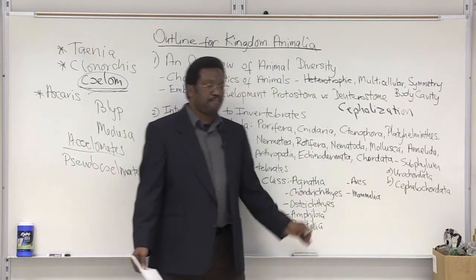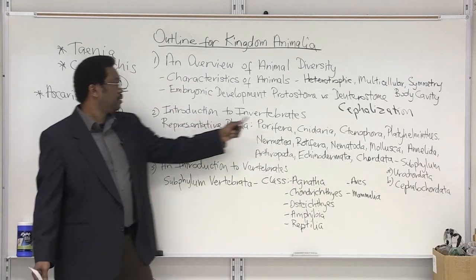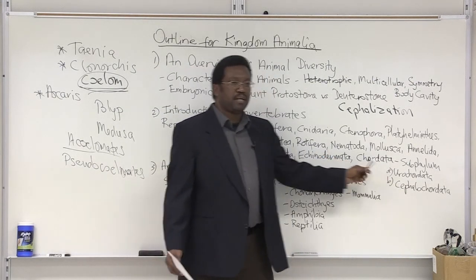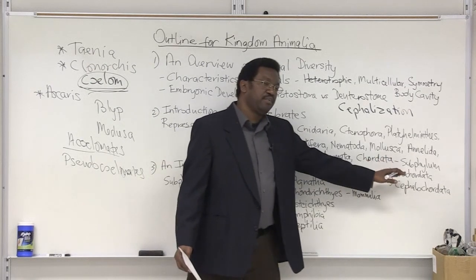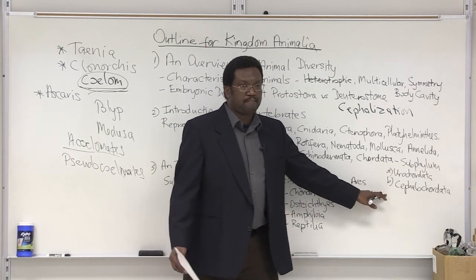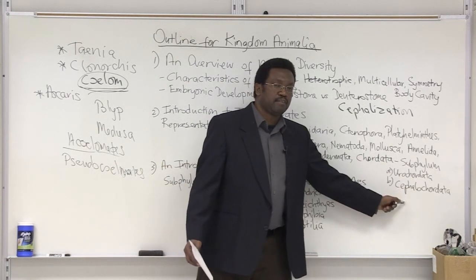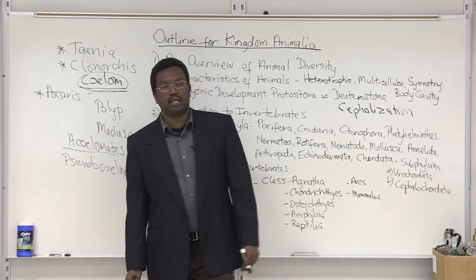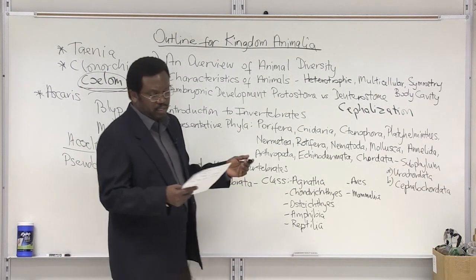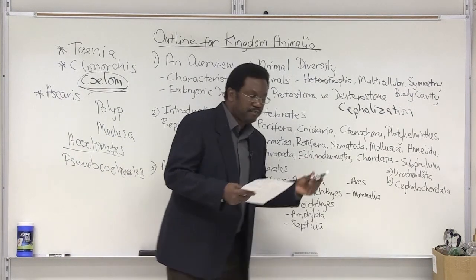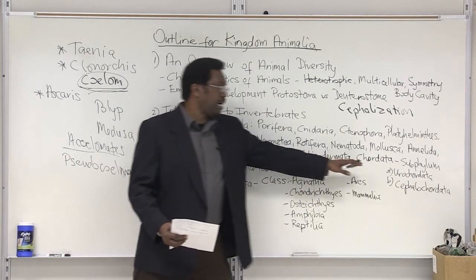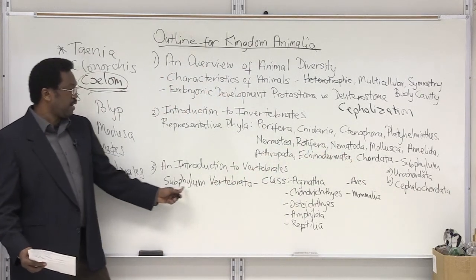The final phylum on our list that fits both the invertebrate and vertebrate group is phylum Chordata. This phylum fits both groups. In terms of invertebrates, there are two subphylums that fall in that category: Urochordata and Cephalochordata. The urochordata are the tunicates, and cephalochordata are the lancelets. These are two invertebrates — no backbone — but still part of phylum Chordata in terms of chordate characteristics. Then we have subphylum Vertebrata, with its classes of animals that fit into the vertebrate category.